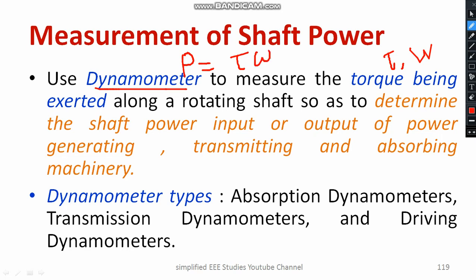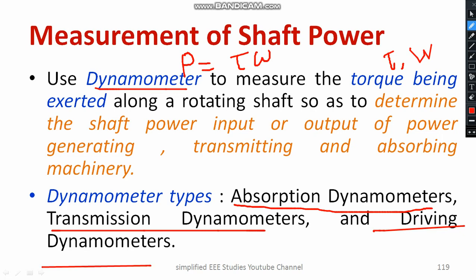There are different varieties of dynamometers: absorption dynamometers, transmission dynamometers, and driving type dynamometers. These are the different varieties of dynamometers available.